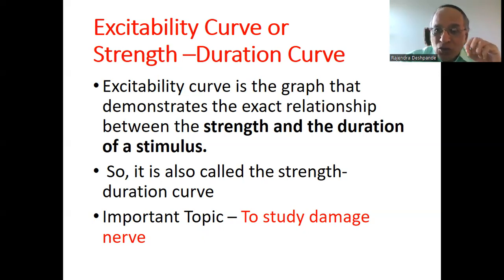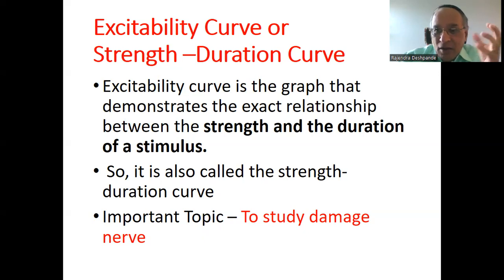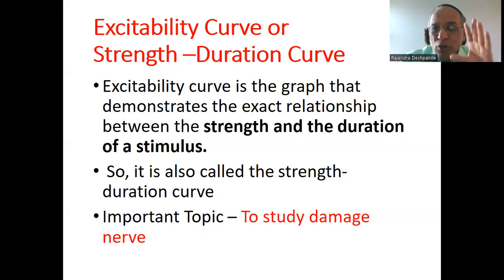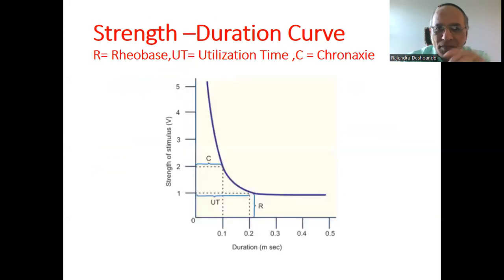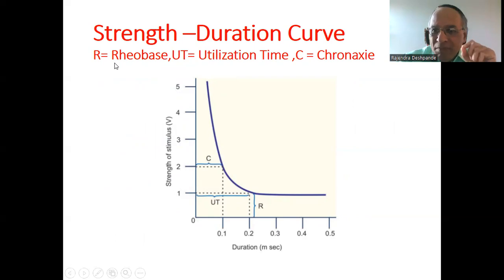This is an important topic to study the damage of the nerve. I have had some previous lectures regarding the neuromuscular junction and nerve damage. Whenever the nerve gets damaged, that will affect the muscular activity, and to study how much will be the damage, we have to know about the strength duration curve. These important terms can be asked as a SAQ, as a definition, as well as for MCQ purposes.